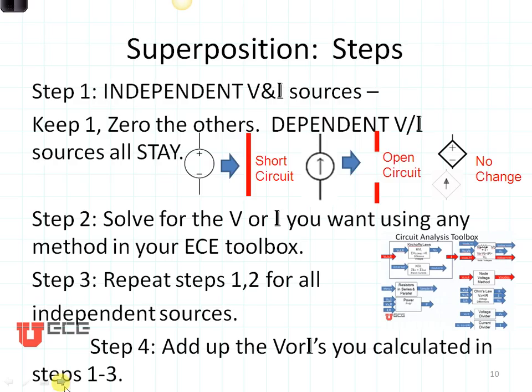So in summary, here are the steps for solving superposition problems. Begin by looking at the independent voltage and current sources. Keep the first one and zero out the others. Zero them by converting voltage sources to shorts, current sources to opens, and dependent sources, just leave those the same.